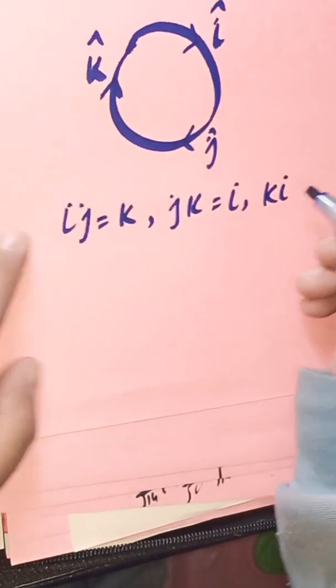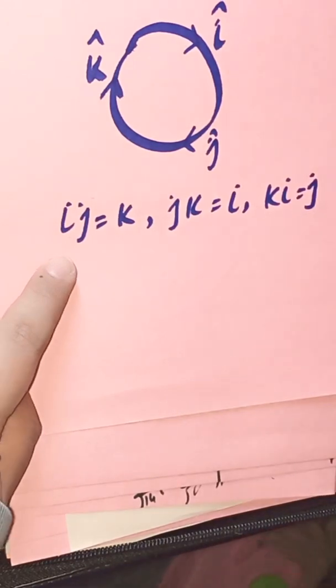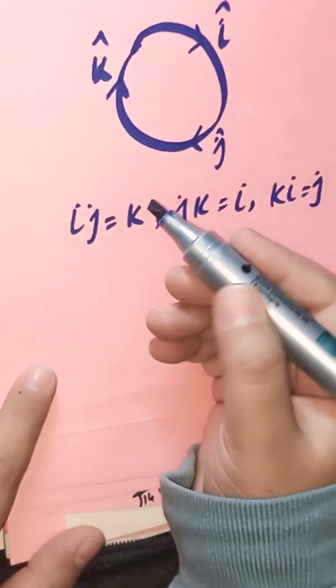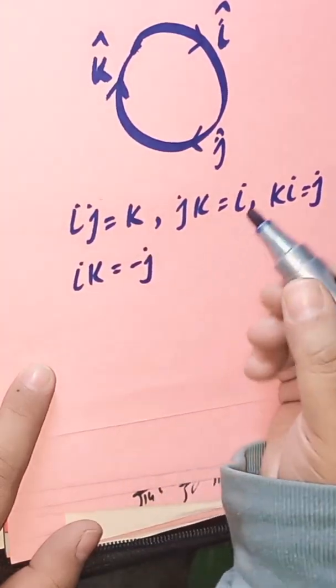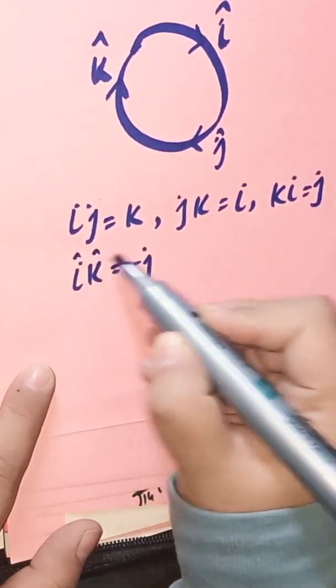The vector i cross j would be equals to k following the direction of these arrows. We can see that j cross k equals to i, then k cross i equals to j.